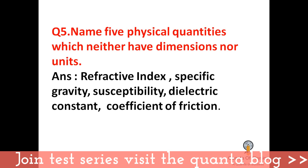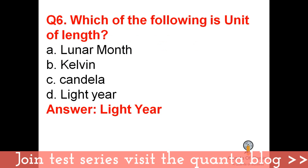Name five physical quantities which neither have dimensions nor units — this is an important question. These are: refractive index, specific gravity, susceptibility, dielectric constant, and coefficient of friction. All of these have neither dimensions nor units.